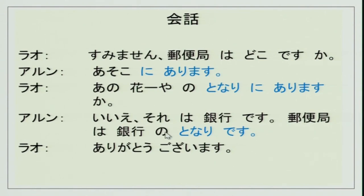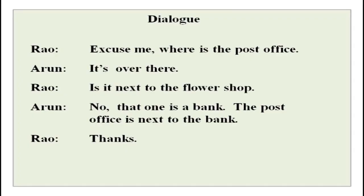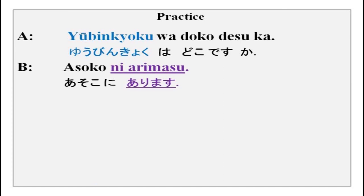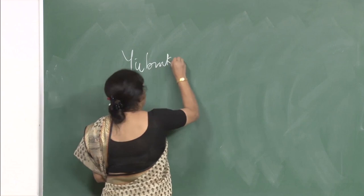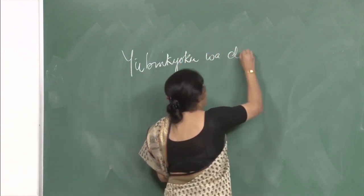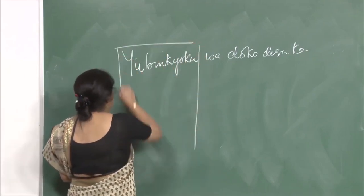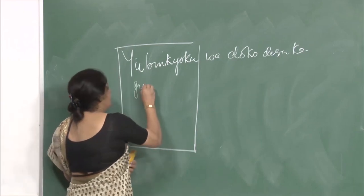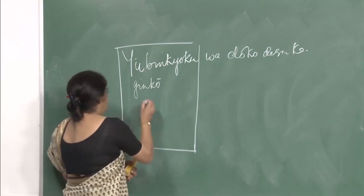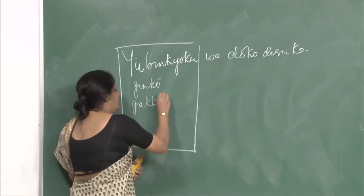This is in the script with kanji and hiragana today, and there is no katakana in the conversation since there are no foreign words. Kanji and hiragana are written together with spaces between words for ease of understanding. Yuubinkyoku wa doko desu ka — and the answer was asoko ni arimasu. You can replace yuubinkyoku with other words you have done.